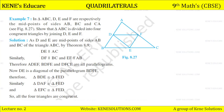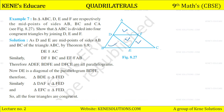In triangle ABC, D, E, F are respectively the midpoints of sides AB, BC, and CA. Show that triangle ABC is divided into four congruent triangles by joining D, E, and F. Here ABC is given, and D, E, F are the three midpoints which have been connected.